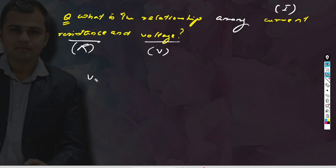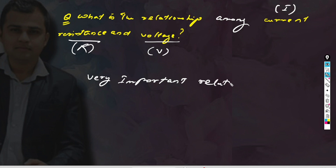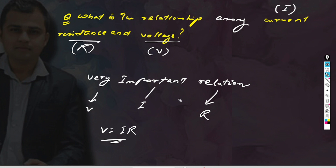This is a very important relation: V is equal to I times R. So what is V? V is the potential difference between two ends of a conductor. Suppose there is a potential gap between two points in that conductor.